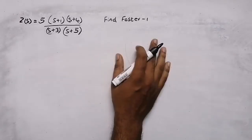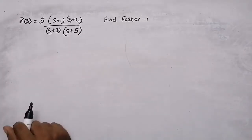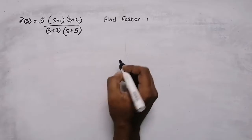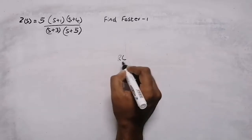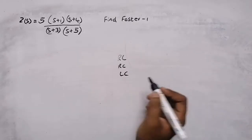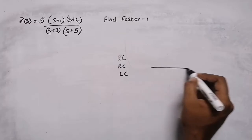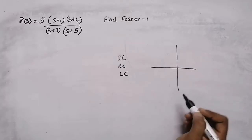In this question, we need to find the Foster Form 1 network of this impedance function. But in the question, they will mention whether it is an RL, RC or LC circuit. So how to find it? For finding it, you need to draw the pole-zero plot.